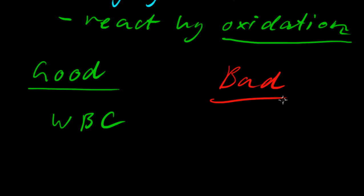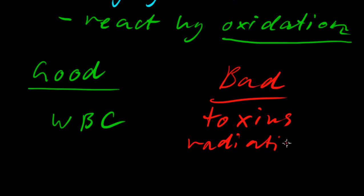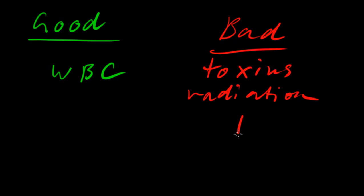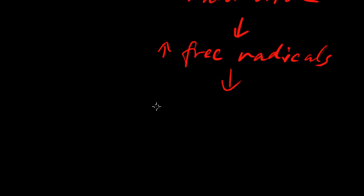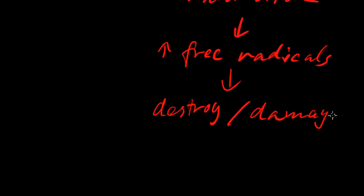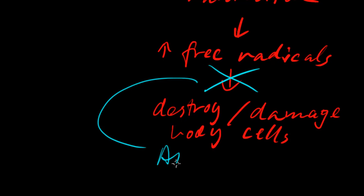However, there's also the bad. So, if you're exposed to particular toxins or radiation, then this can lead to an increase in free radicals in your body — harmful free radicals. And, of course, those destroy or damage body cells, which, of course, is bad. We don't want that. So, what we can do is we can actually stop this by antioxidants.